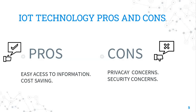Now we know what is IoT and what are the examples of IoT. Let us discuss the pros and cons of IoT. Like everything, IoT technology also has some advantages and disadvantages. Pros are easy access to information and cost saving — IoT technology is very easy for accessing information, it is cost saving, and it is very reliable. Cons are privacy concern and security concern. There is a risk of privacy and security in IoT because the security and privacy is not very transparent in IoT technology.